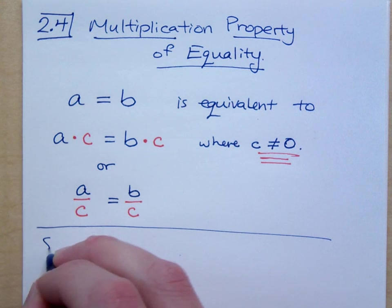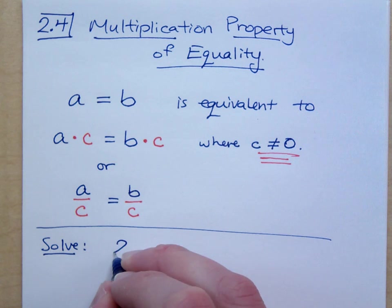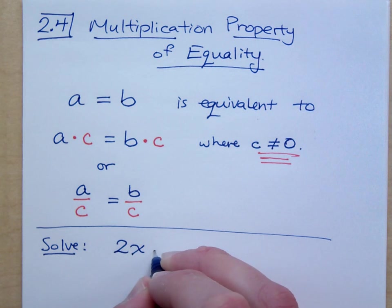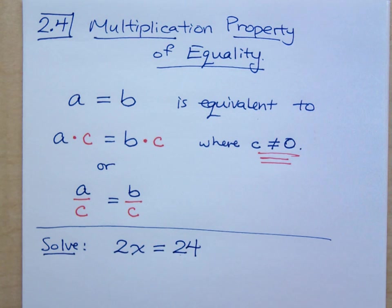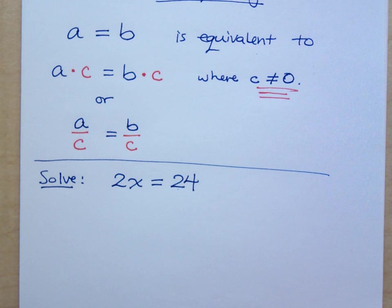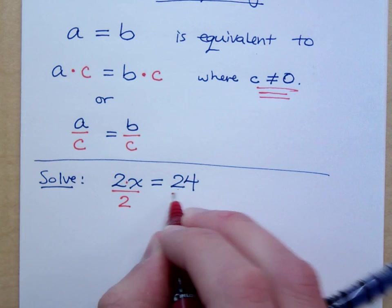So, let me show you how easy this can be. You don't think this is easy? Check this out. 2x equals 24. Now, we talked about this before, how 2 is a coefficient. And what's really going on here between the 2 and the x is multiplication. Well, if 2x is 24, how much is 1x? How do I figure that out?